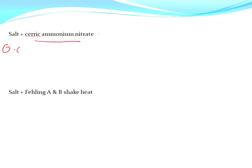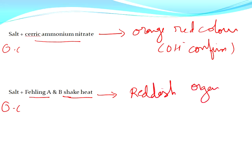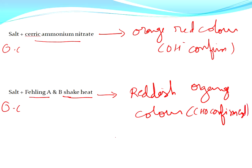If orange-red color appears with a specific reagent, then alcohol is confirmed. For distinguishing aldehyde from ketone, take the organic compound, add Fehling's solution A and Fehling's solution B, and shake it. If reddish-orange color appears, then aldehyde is confirmed. If no reddish color appears, then ketone is present.